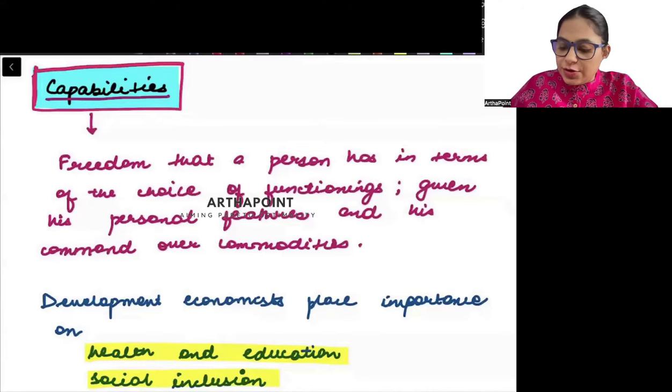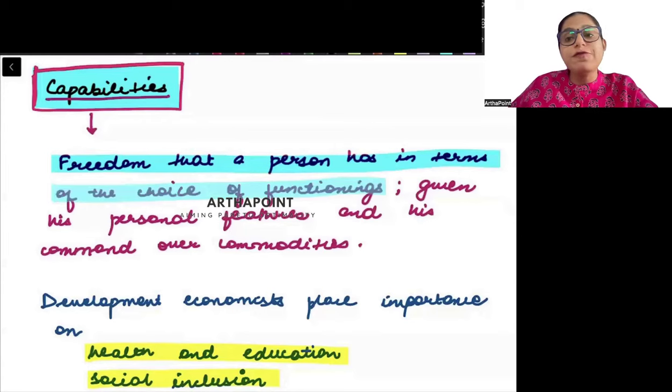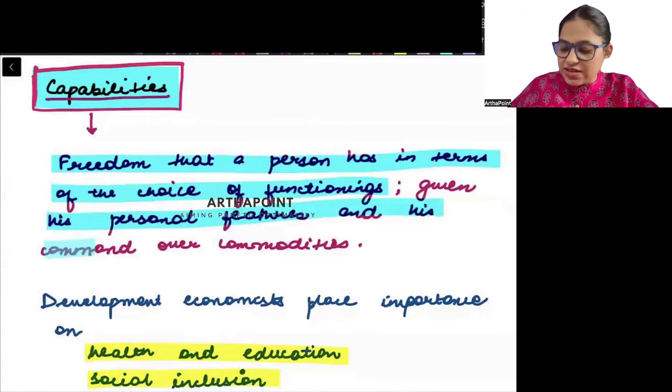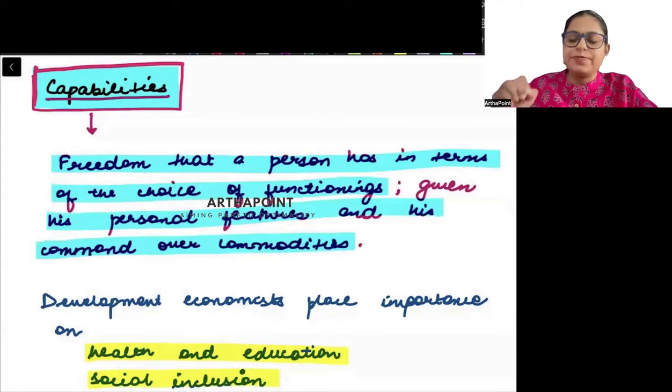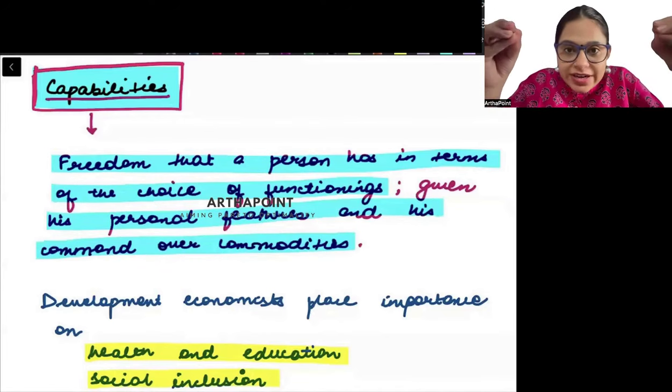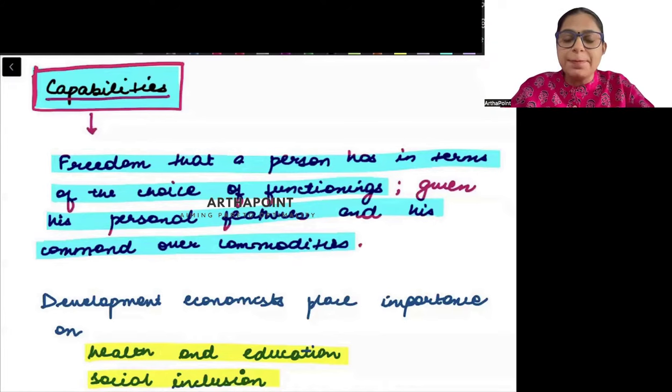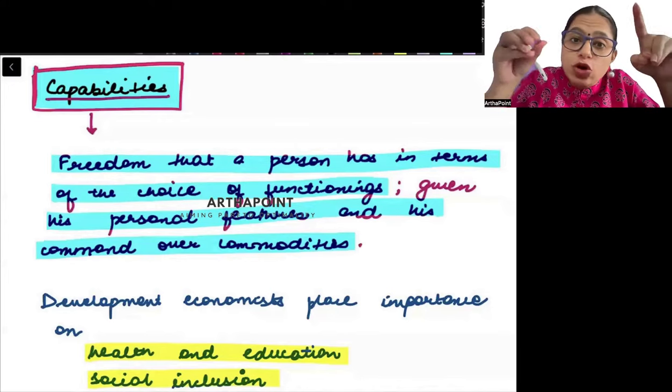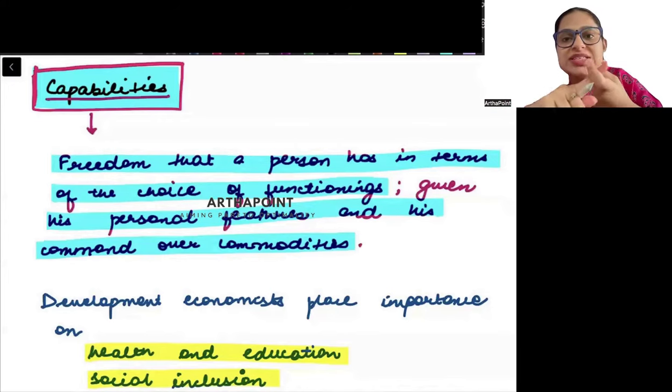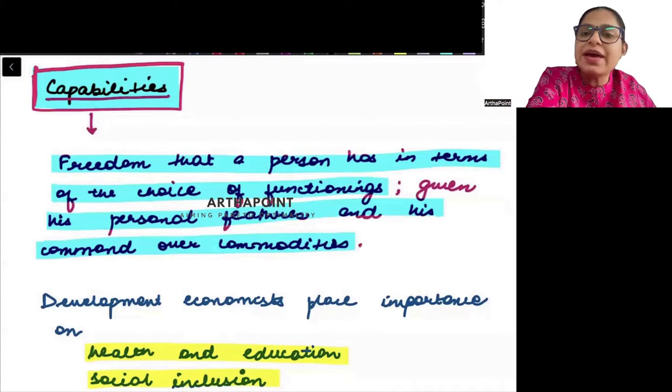Listen, freedom that a person has in terms of choice of functionings, given his personal features and his command over commodity. What is capability? The freedom that a person has over what he wants to do. Does a person have freedom to do what he wants to do with what he has?